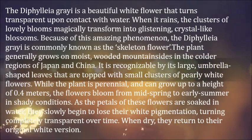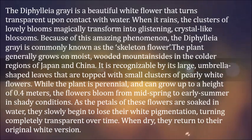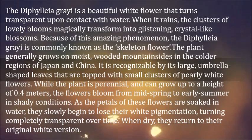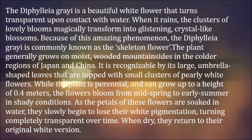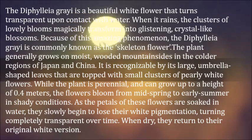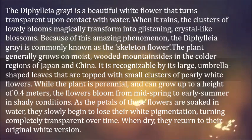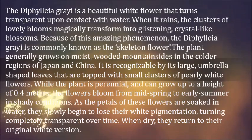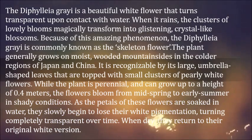The Diphylleia grayi is a beautiful white flower that turns transparent upon contact with water. When it rains, the clusters of lovely blooms magically transform into glistening, crystal-like blossoms. Because of this amazing phenomenon, the Diphylleia grayi is commonly known as the skeleton flower. The plant generally grows on moist, wooded mountainsides in the colder regions of Japan and China. It is recognizable by its large, umbrella-shaped leaves that are topped with small clusters of pearly white flowers.